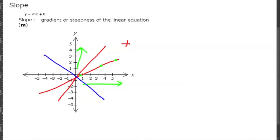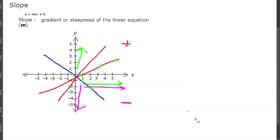Looking at this line, as you move to the right you're actually getting smaller y values. Since you're going to the right and going lower, the blue line represents a negative slope.